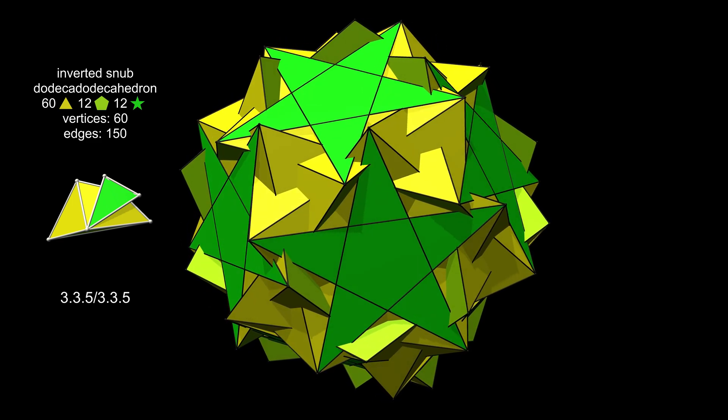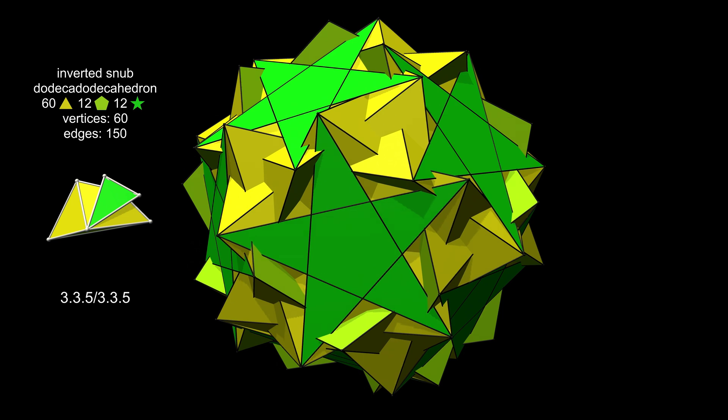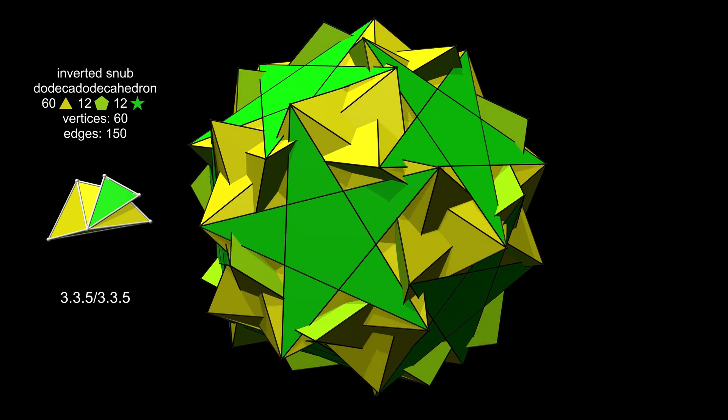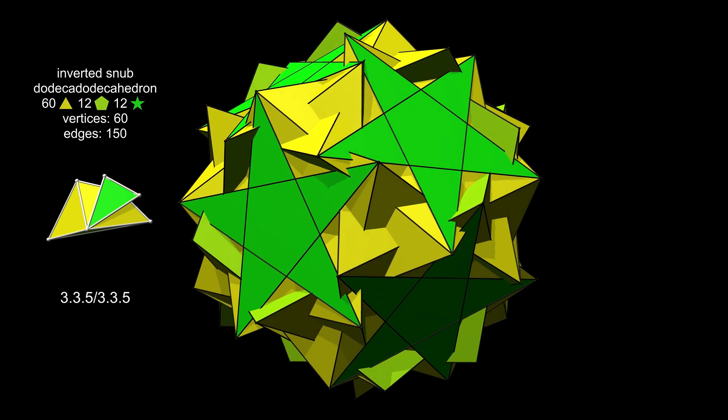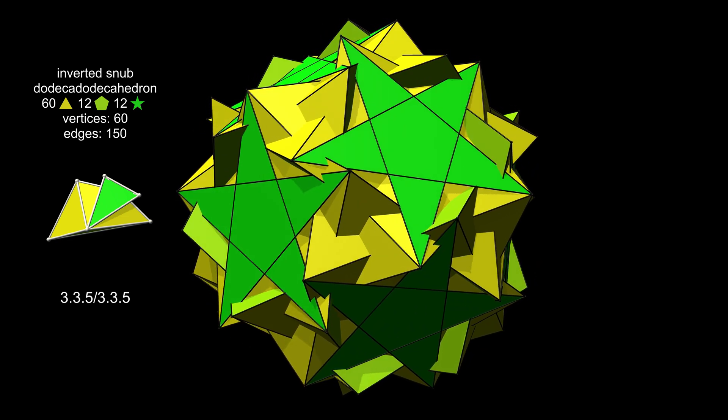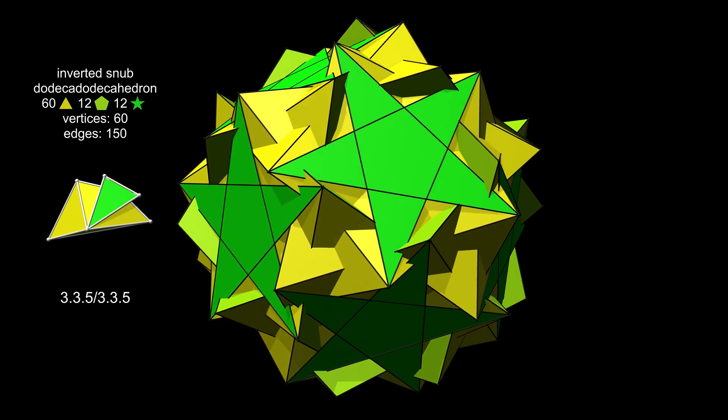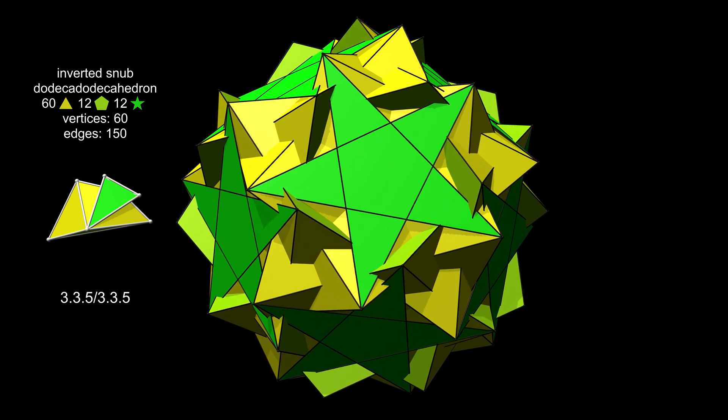Also from the vertex figure, notice how the pentagon at the bottom of the figure is barely visible because it's almost edge-on to the camera. This shows that it passes close to the centre of the polyhedron. The pentagons are mostly hidden inside the figure.